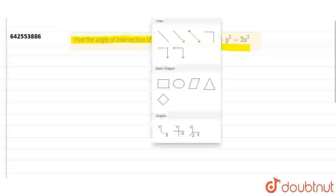Hello students, the question is: find the angle of intersection of the curves xy equals a square and x square plus y square equals to twice of a square. We will start the question by drawing a rough diagram.